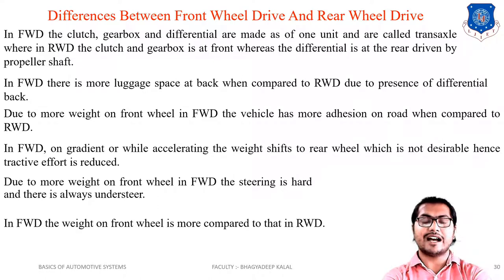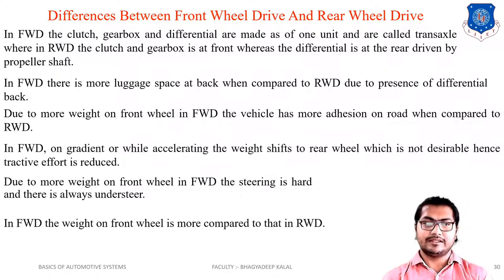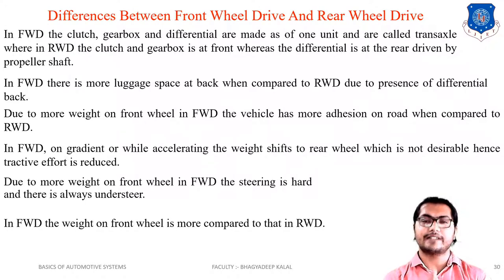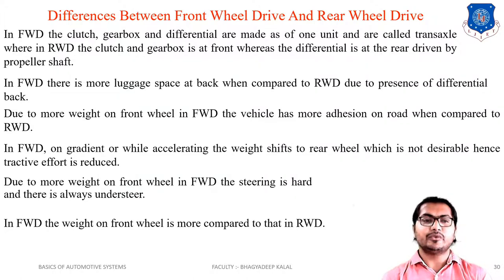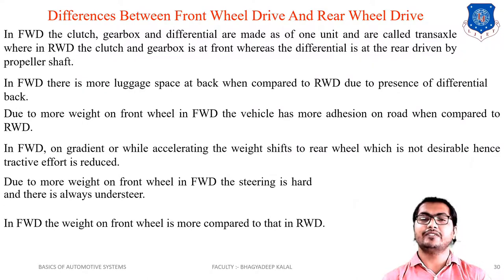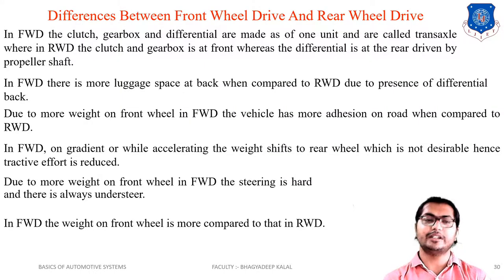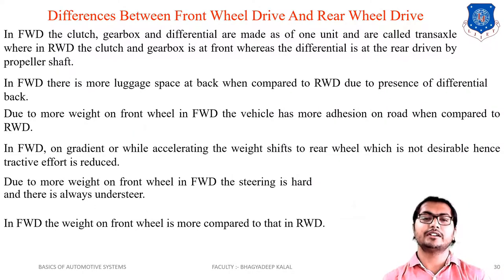Now for important exam questions: what is the difference between front-wheel drive and rear-wheel drive? In front-wheel drive, the clutch, gearbox, and differential are combined into one unit called a transaxle. In rear-wheel drive, the clutch and gearbox are at the front while the differential is at the rear, driven by a propeller shaft. In front-wheel drive, more luggage space is available at the back compared to rear-wheel drive. Due to more weight on the front wheels, front-wheel drive has more road adhesion, but the front tyres wear more.